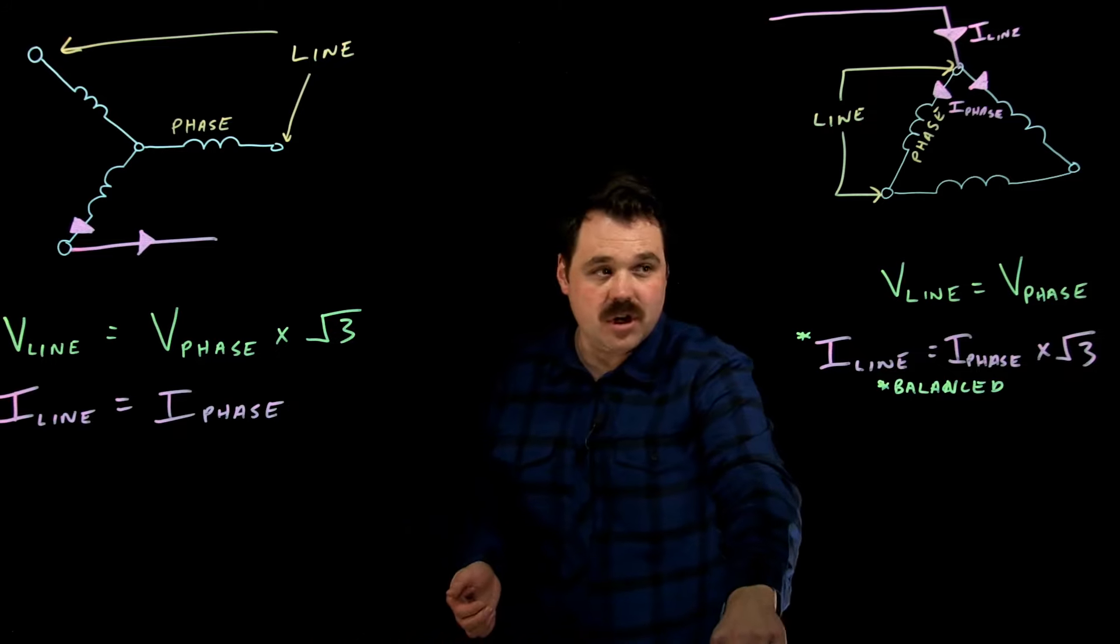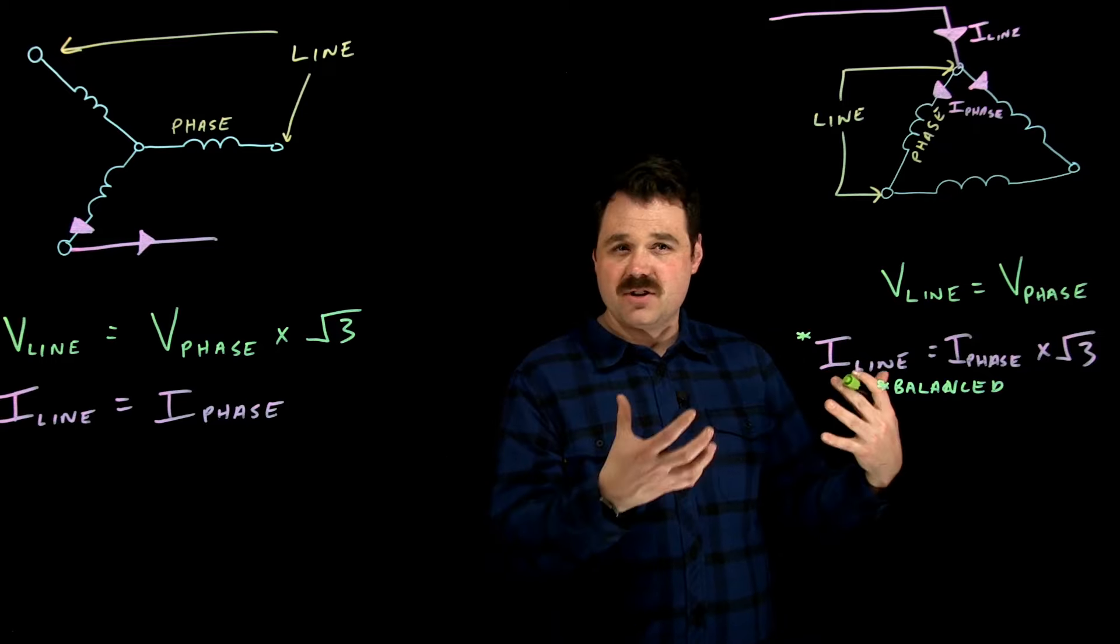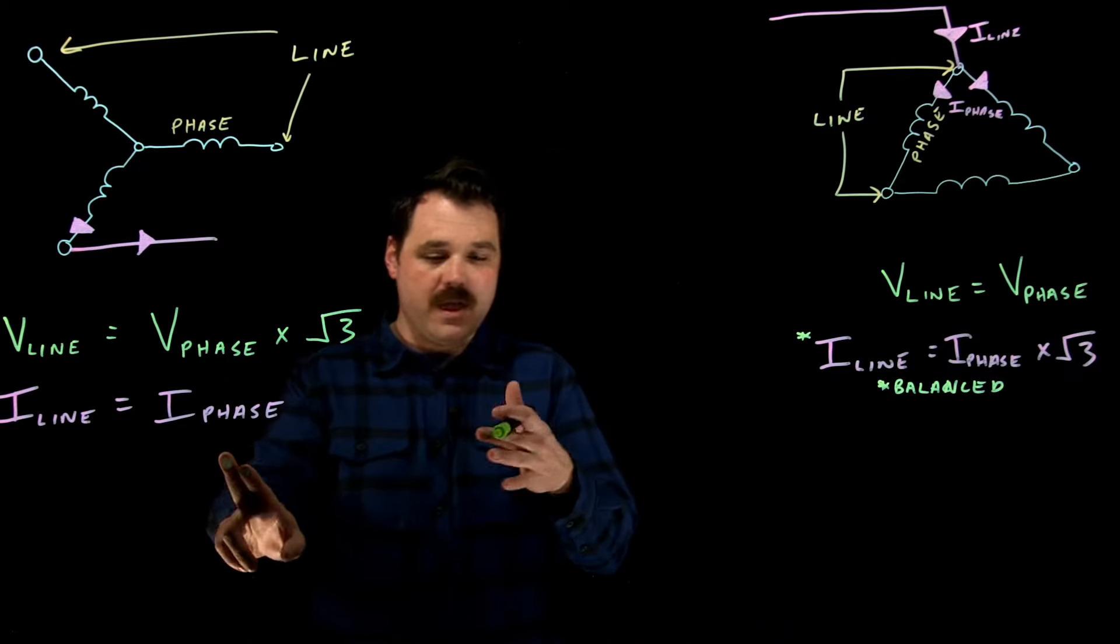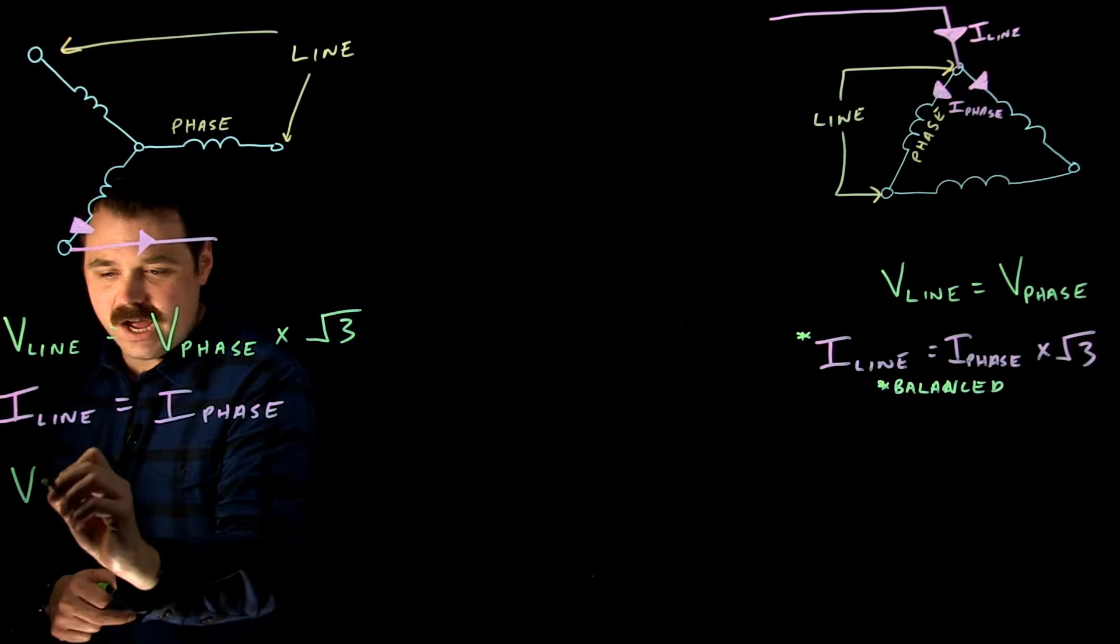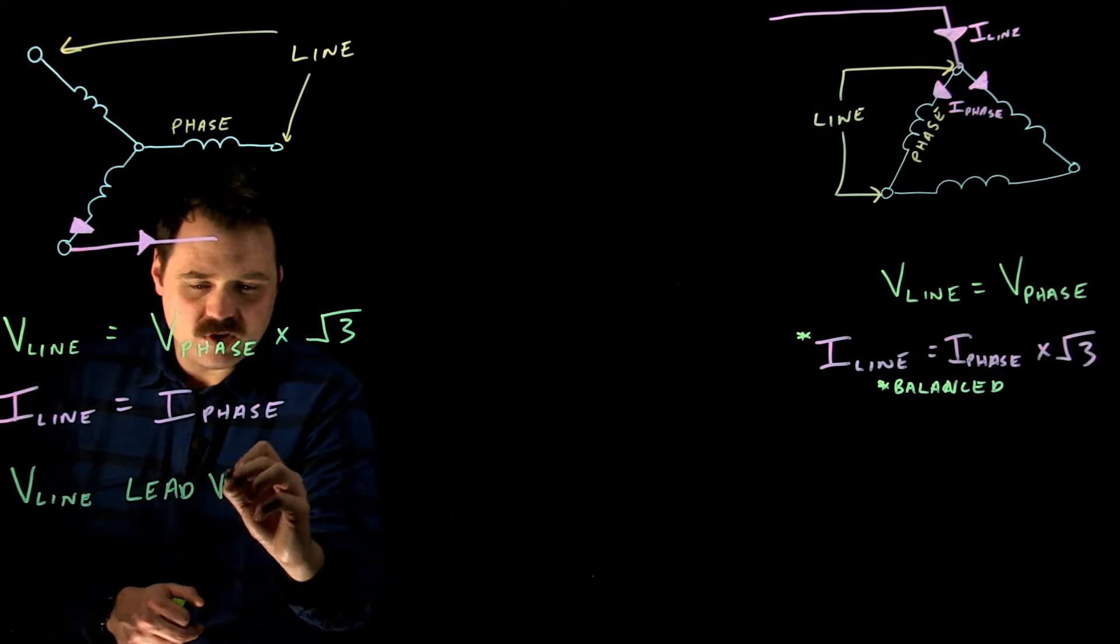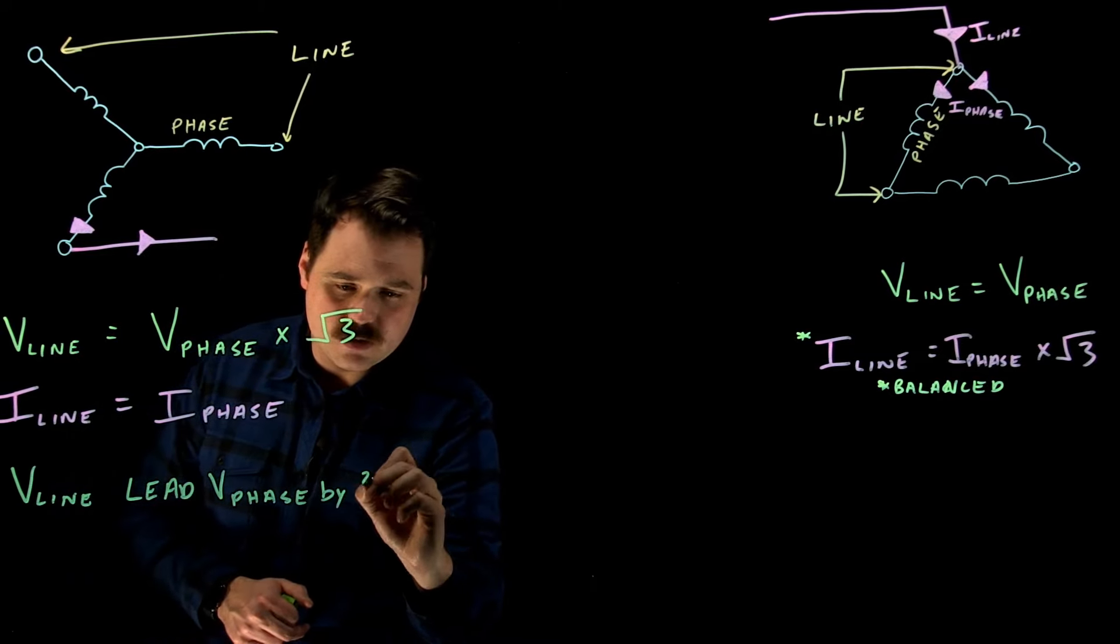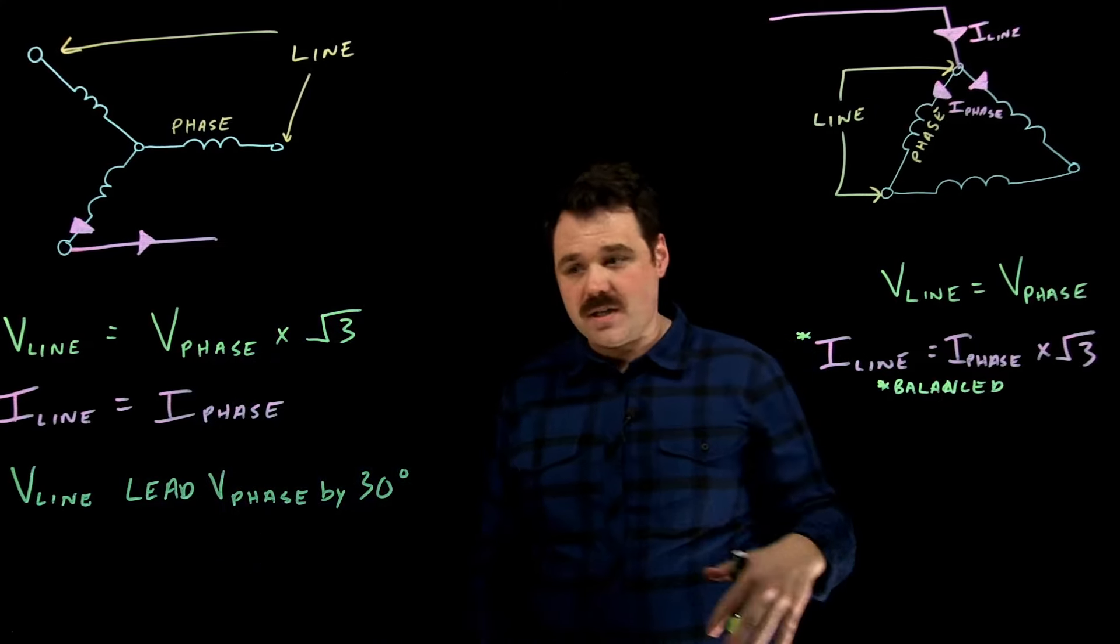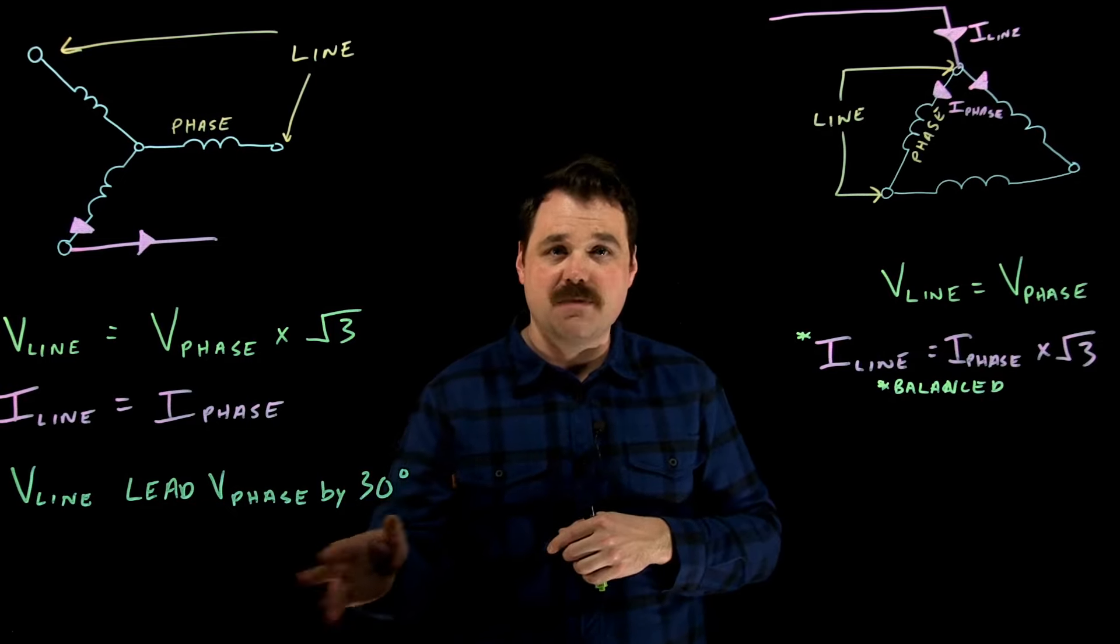Now, the last thing I want us to touch on here before we're done with this video is just the relationships on a phasor diagram. So in this case, for a Y circuit, because I line equals I phase, that's going to be where that is. But the voltages on a phasor diagram, V line will actually lead V phase by 30 degrees. And what we would say over here with our delta, so that has to do with the way those angles line up. And again, I'll link that video below to get more in depth into that relationship.